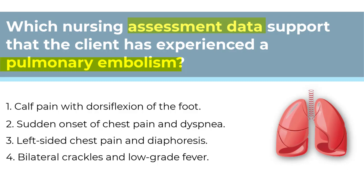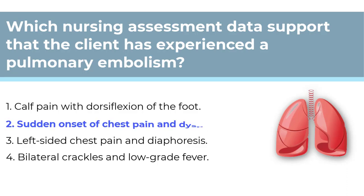The correct answer is number two. A sudden onset of chest pain and dyspnea are common signs of a pulmonary embolism. Number one is an example of a Homans sign, which is an indicator of a DVT. Number three is eliminated because it references left-sided pain, which is a sign of an MI. Number four — bilateral crackles and low-grade fever — is a possible sign or symptom for pneumonia, but is nonspecific for a PE.